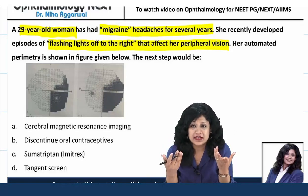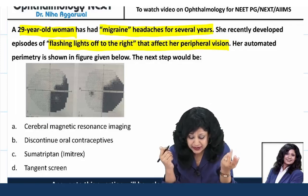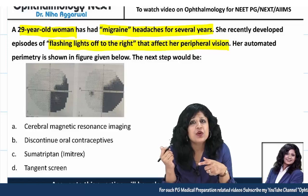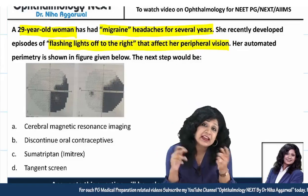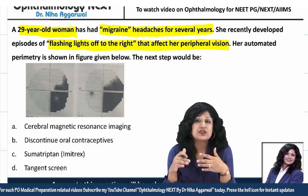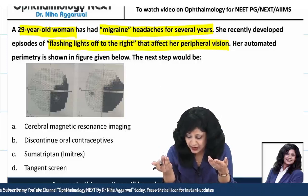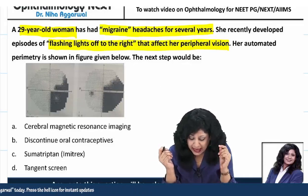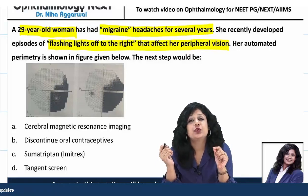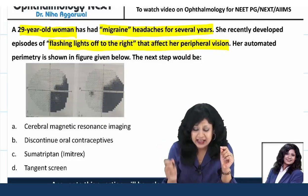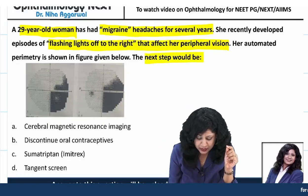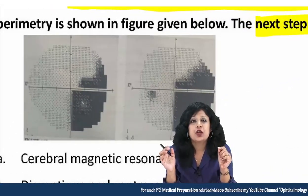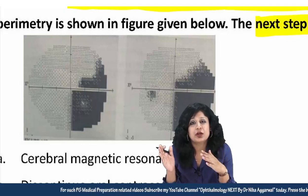Are you expecting vision loss in this patient? I want to know if there really is a vision loss or if the patient is perceiving something else. Her automated perimetry was done, they have shown you the perimetric finding, and they are asking what should be the next step.